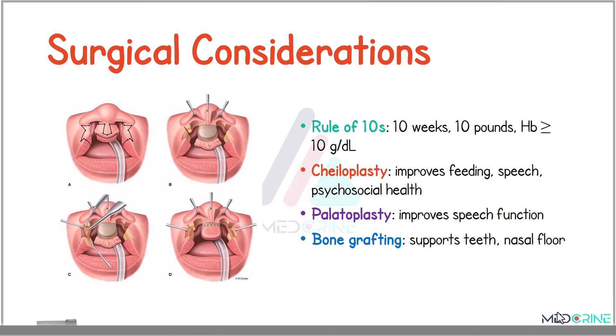During surgical considerations, a rule of 10 is applied: surgery can be done at 10 weeks of age, when a child is at least 10 pounds, having a hemoglobin level of more than 10 grams per deciliter. Cheiloplasty surgery can also be done to improve feeding, speech, and psychosocial health. Palatoplasty can improve speech function, and bone grafting can be performed to support the teeth and nasal floor.